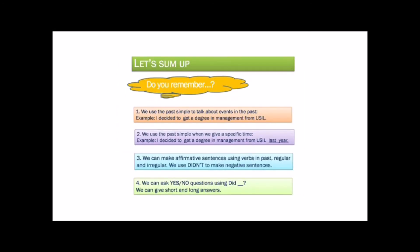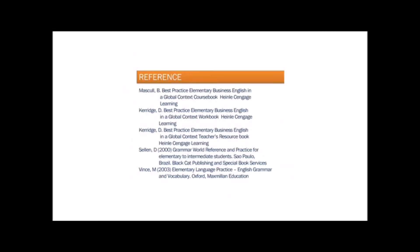Let's sum up. One: we use the past simple to talk about events in the past. For example, I decided to get a degree in management from Mozilla. Two: we use the past simple when we give a specific time. Example: I decided to get a degree in management from Mozilla last year. We can make affirmative sentences using verbs in past — regular and irregular. We use 'didn't' to make negative sentences. Four: we can ask yes-no questions using 'did'. We can give short and long answers.